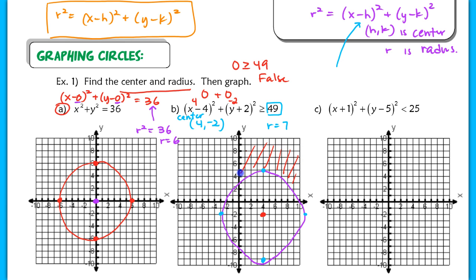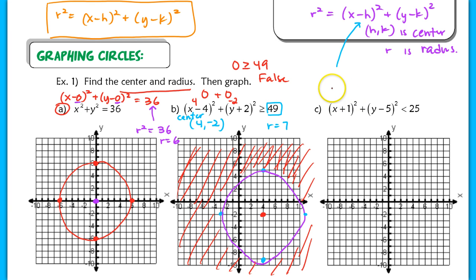The outside region represents all the points that satisfy the original inequality. That's the graph for this particular inequality. A very similar strategy applies to example C: the center is at (negative 1, positive 5), and the radius is 5.